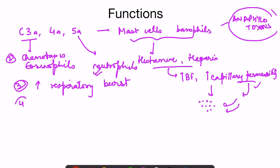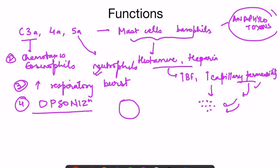Fourth is opsonization — the mechanism by which phagocytosis is enhanced. C3B is bound on the surface of the microorganism, and WBCs have a complement binding site, so C3B can bind to both, bringing neutrophils and microorganisms closer together. This is opsonization, again helping WBCs kill the microorganism.